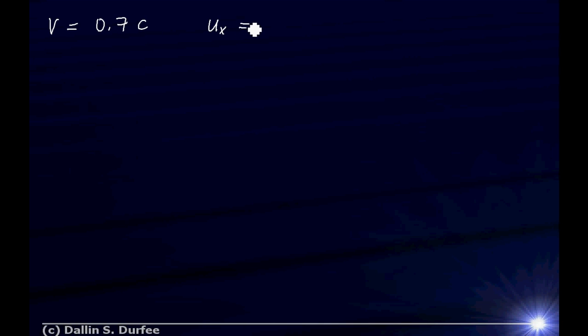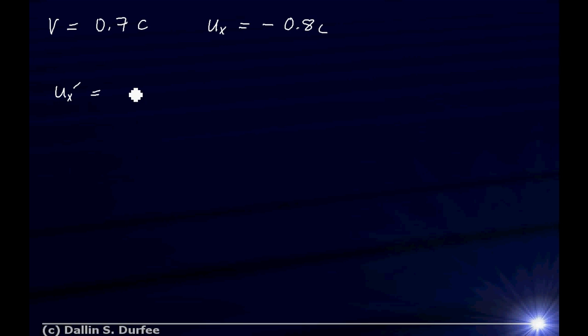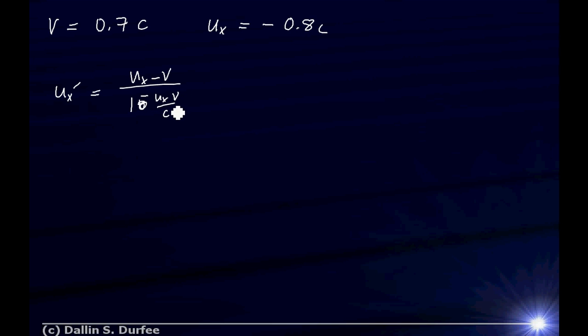We're transforming into a reference frame moving at a velocity of 0.7C. The velocity of the spaceship we're measuring is in the negative X direction — it's negative 0.8C. So spaceship B is moving in the negative X direction at a speed of 0.8 times the speed of light in the Earth reference frame. Now we want to transform into a reference frame moving at this velocity. So our Lorentz transformation equation is UX prime equals UX minus V, over 1 minus UX·V over C squared.